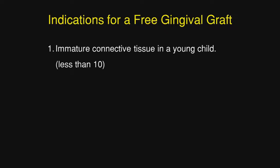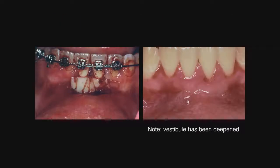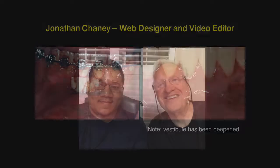There is immature tissue in a young child in the palate. If a child is less than 10, you will necessarily have to do a free gingival graft. But if the patient is 12–14, connective tissue is generally mature enough to be used and placed in a pouch. In the case I just showed, the poor quality of tissue did not lend itself to creating a pouch, so a free gingival graft was done. Note that the vestibule has also been deepened by the free gingival graft.